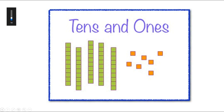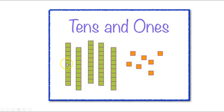This is what the tens and the ones look like. You may remember it from last year. We have the tens, which are represented by these straight lines or this group of ten here. And our ones are just these single squares here.